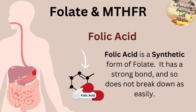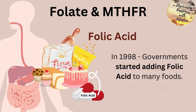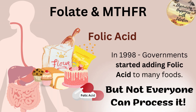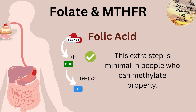Folic acid is actually a synthetic form of folate and it has a very strong bond — it does not break down as easily, especially when cooking. So because folate is so essential and not easy to absorb from food, in 1998 many governments started adding folic acid to many foods. Not everyone can process it though. Folic acid actually has to be broken down in two extra steps to become THF, which is a form the body can use. This extra step is very minimal in people who can methylate properly.